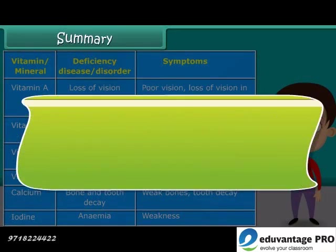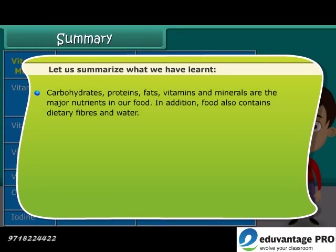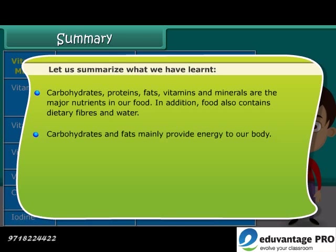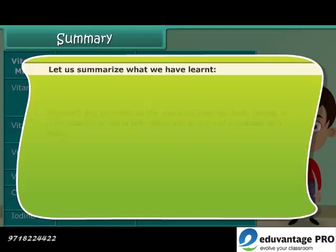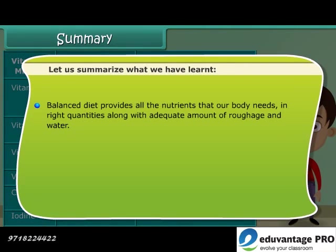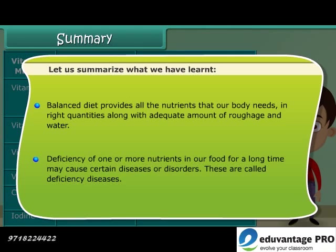To summarize: carbohydrates, proteins, fats, vitamins, and minerals are the major nutrients in our food. In addition, food also contains dietary fibers and water. Carbohydrates and fats mainly provide energy to our body. Proteins and minerals are required for the growth and maintenance of our body. Vitamins help us in protecting our body against diseases. A balanced diet provides all the nutrients that our body needs in the right quantities, along with adequate roughage and water. Deficiency in one or more nutrients over a long time may cause certain diseases or disorders, called deficiency diseases.